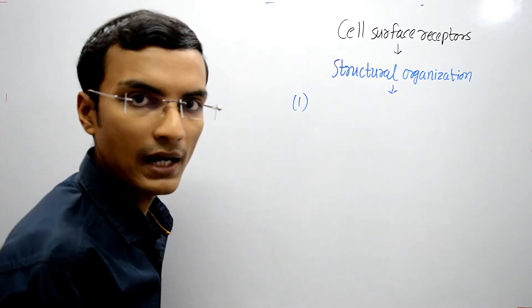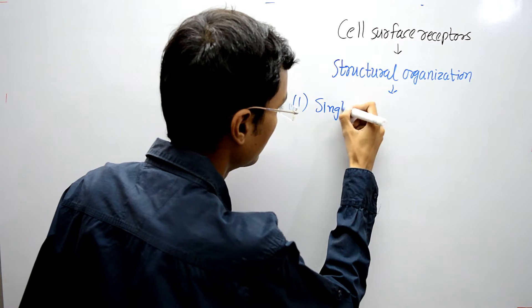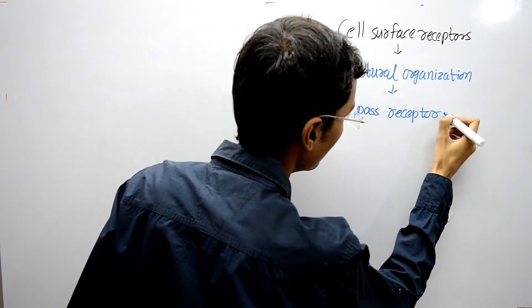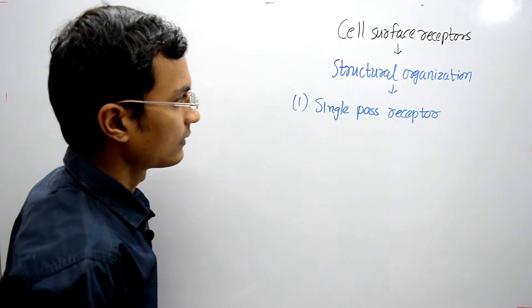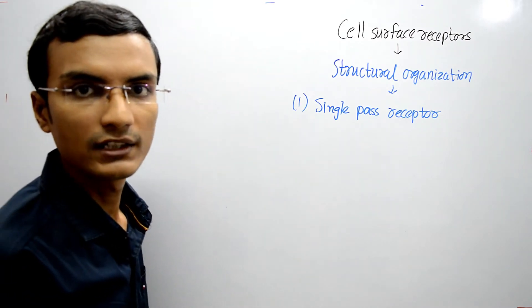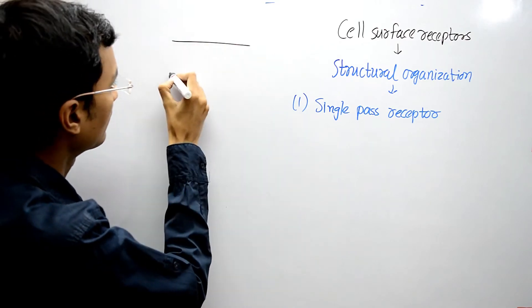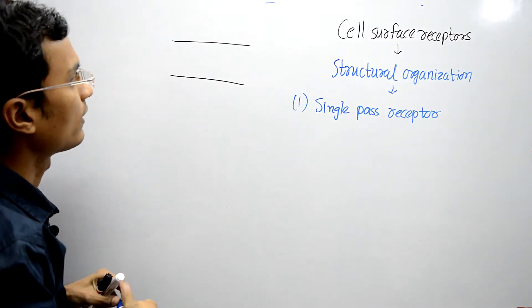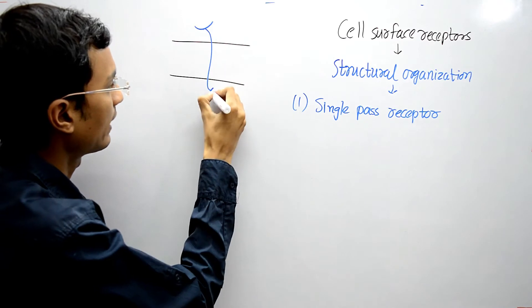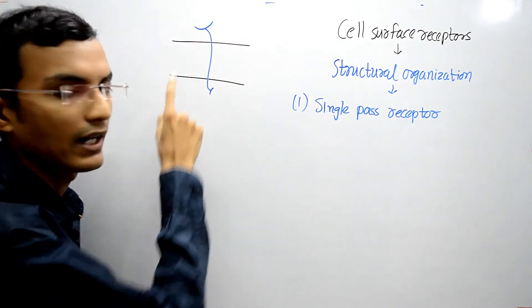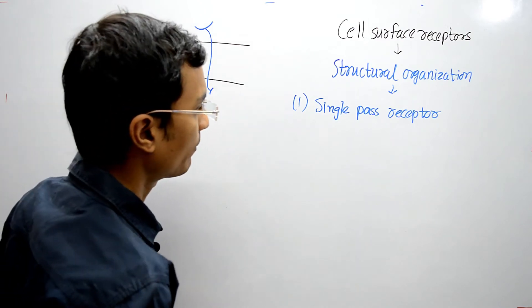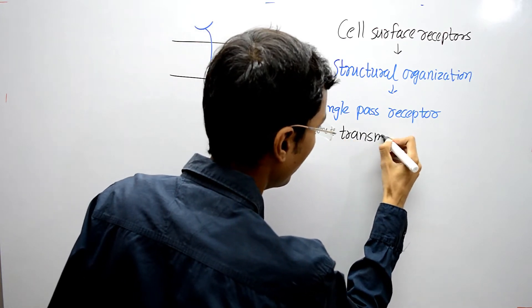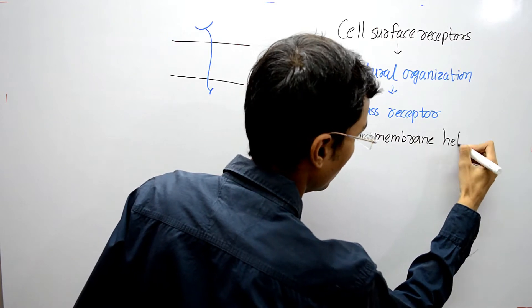The first is the single-pass receptor. In this case, the receptor has only one transmembrane helix. So this is the cell membrane, and the receptor has only one transmembrane helix. It is called a single-pass receptor.